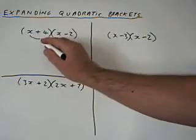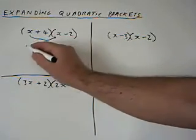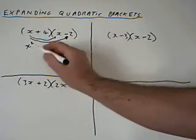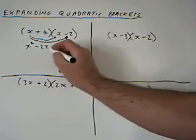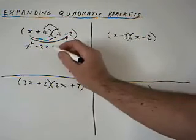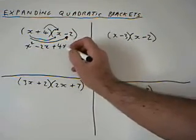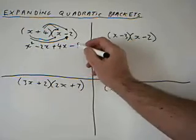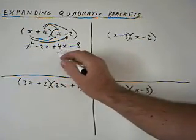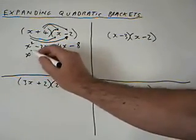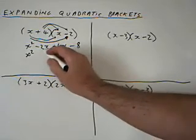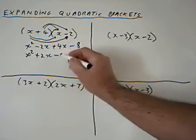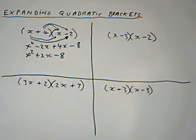Do this one first. x times x, x squared. x times minus 2, minus 2x. 4 times x, plus 4x. And 4 times minus 2, minus 8. Collect the like terms together. We've only got x squared. This bit collects together, so that becomes plus 2x, minus 8. That's that one done.